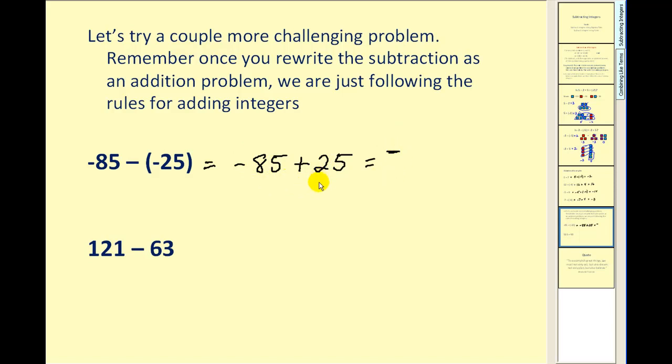And the rules for adding integers states, if we're adding two integers with different signs, we take the absolute value of both. So we have 85 and 25, and we subtract the smaller from the larger. Of course that would be 60. Again, we already determined our answer had to be negative, so we have negative 60.